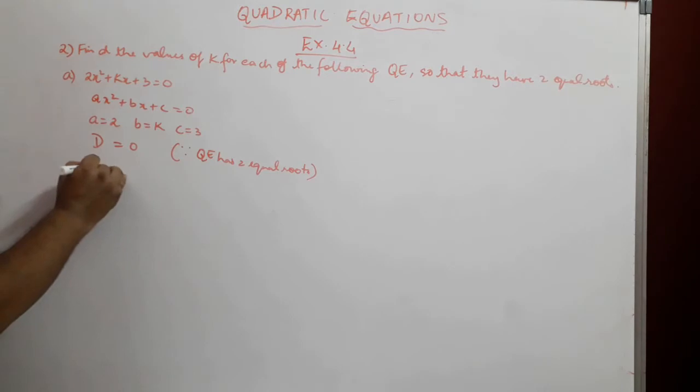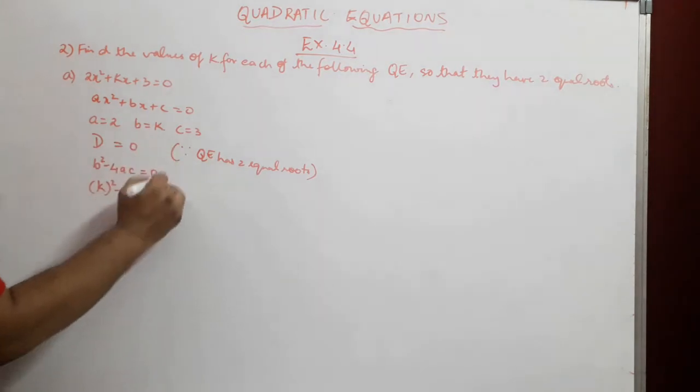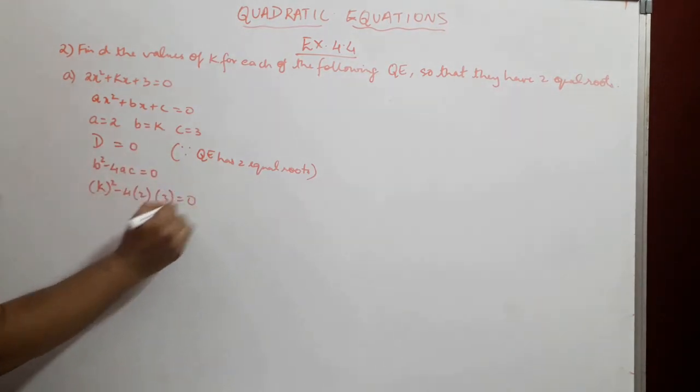What is D? b² - 4ac. So, b² - 4ac = 0. b is k, so k² - 4, a is 2, c is 3 equal to 0.